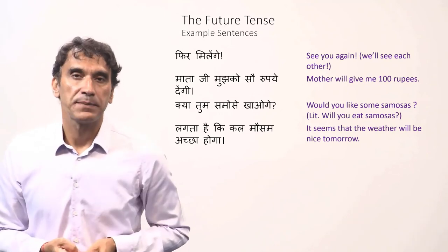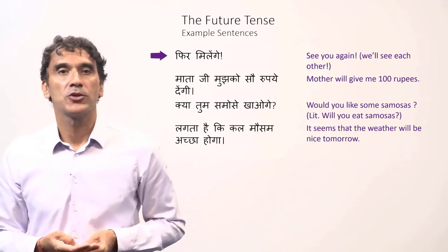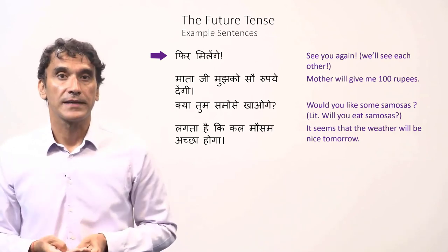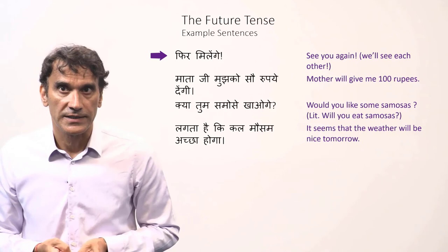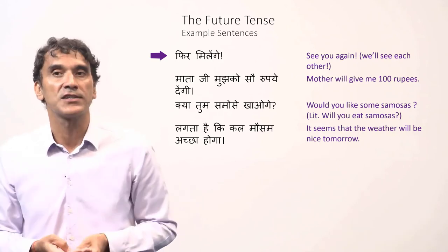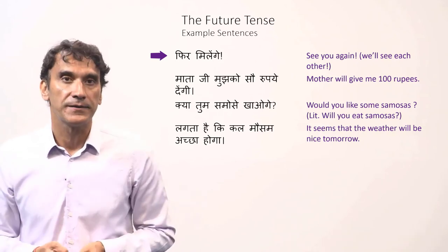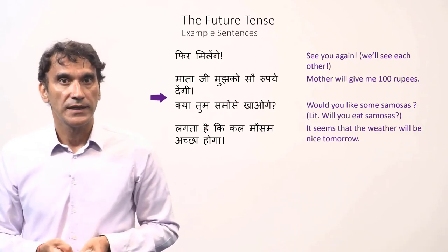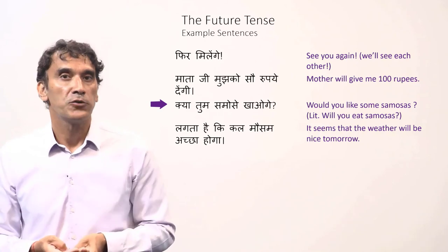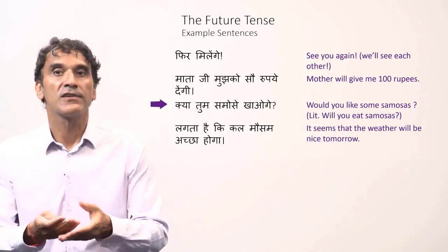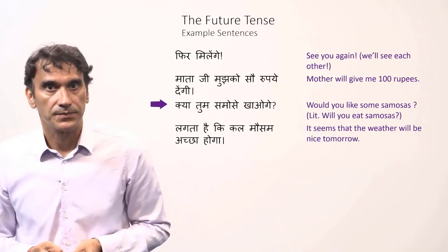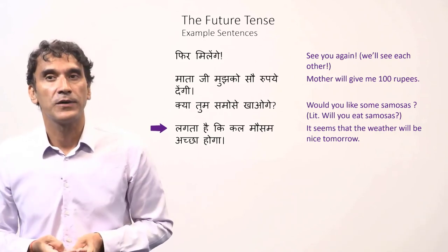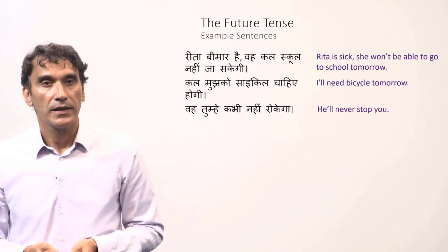'Pher milenge' means 'see you again.' We came across this phrase in the first lesson as a set phrase — it is in fact a future tense. The verb 'milna' means 'to meet,' so the literal translation is 'we will meet again.' 'Mataji mujhko tawru pe dengi' means 'mother will give me a hundred rupees.' 'Kya tum samose khaoge?' means 'would you like some samosas?' — literally 'will you eat samosas?' 'Lagta hai ki kal mausam achha hoga' means 'it seems that the weather will be nice tomorrow.'